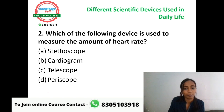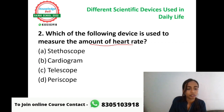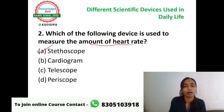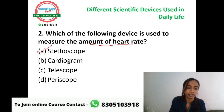The next question: which device is used to measure the heart rate? Options are A: stethoscope, B: cardiogram, C: telescope, or D: periscope. The correct answer is option A, stethoscope. Stethoscope is the device doctors use to measure heart rate or listen to heart sounds. A memory trick: both 'sound' and 'stethoscope' start with S. Cardiogram is used to study heart movements, so option A, stethoscope, is correct.